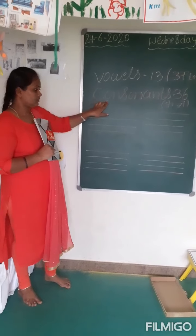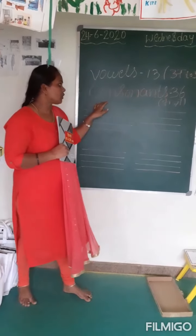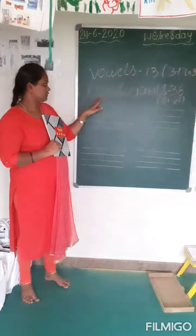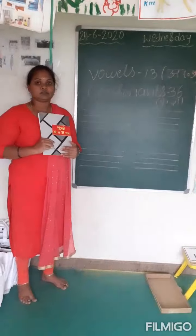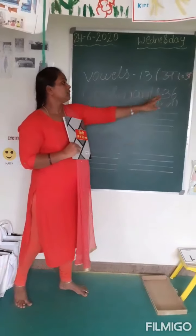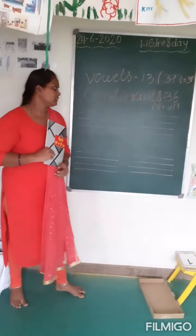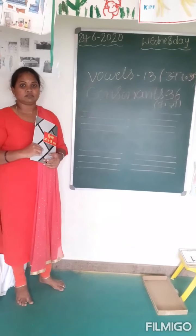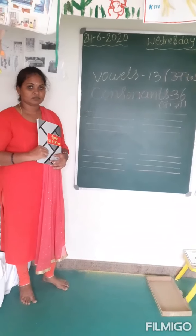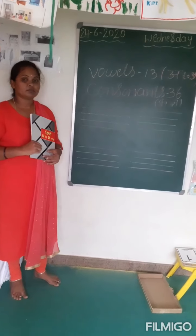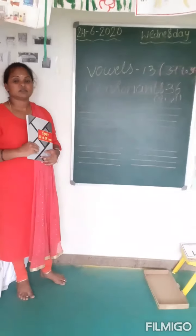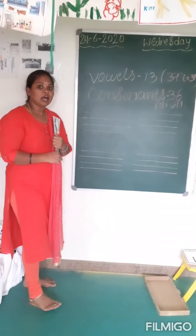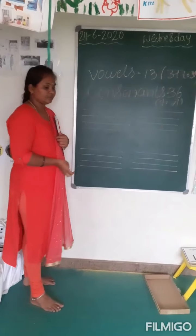And consonants — we call consonants as Vyanjanakshar. How many consonants do we have? 36. These Vyanjanakshar, we are going to learn in UKG. And along with consonants, we are going to form words with Hindi alphabets. And now we are going to revise A to AHA — Swarakshar.